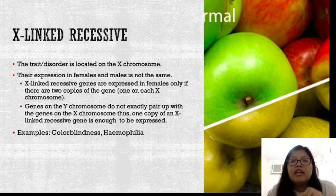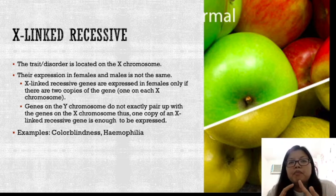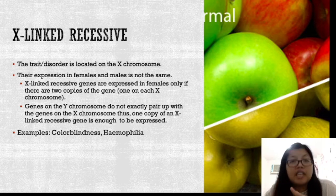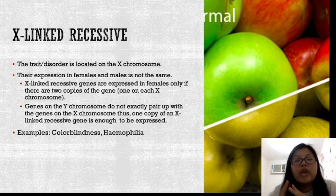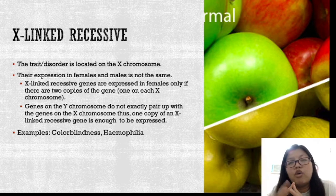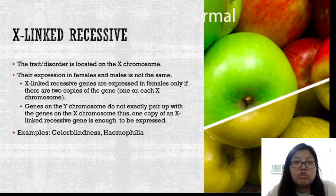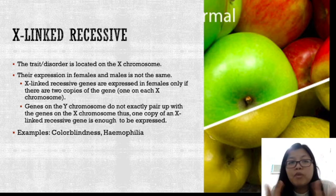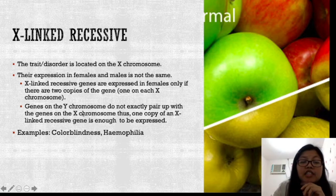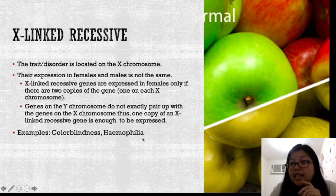For males, because they have only one X chromosome, when they have an X-linked recessive trait, it will be expressed immediately — there is no other X to cover it. The X and Y chromosomes are not homologous, so the traits they code for differ. Examples of X-linked recessive traits we will study today are colorblindness and hemophilia.